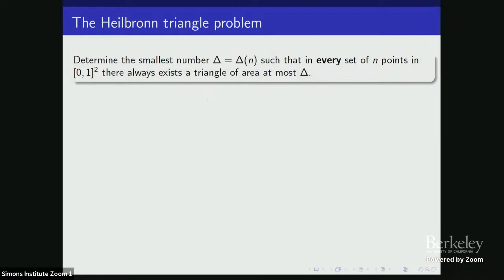So what is this problem? Given a natural number N, one can ask about the following quantity: what is the smallest function delta, delta of N, such that in every configuration of N points in the unit square, there always exists a triangle of area at most delta. So delta is the smallest area that you can find in every configuration of N points in the square.